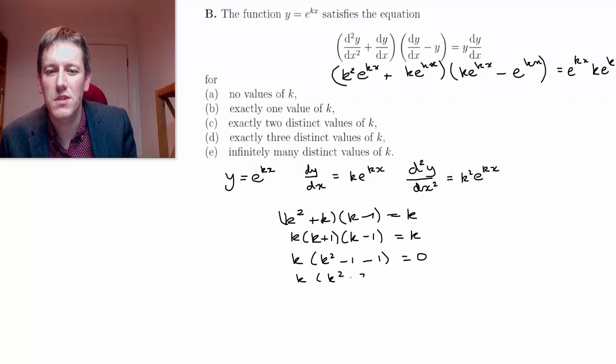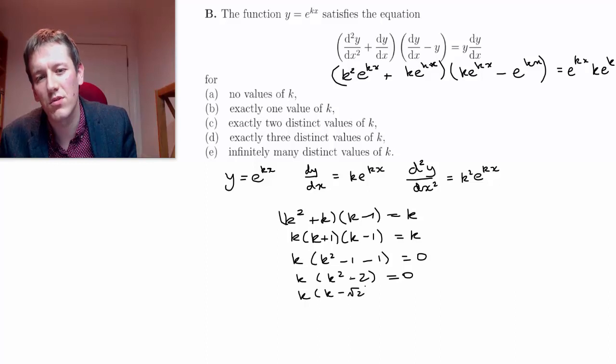So k times k squared minus 2 equals 0. So k, k minus root 2, k plus root 2, using the difference of two squares equals 0.